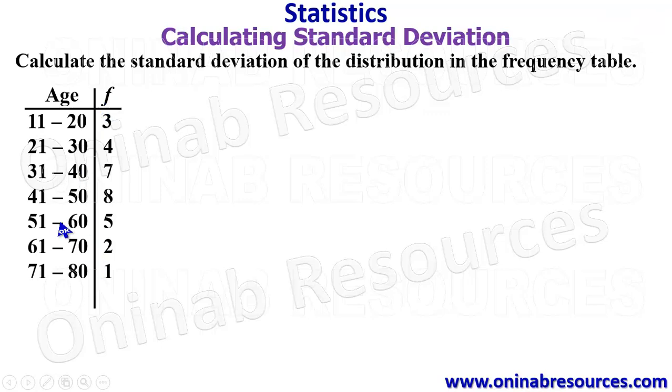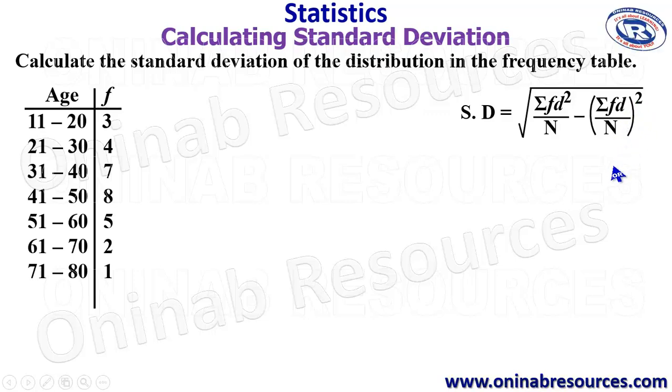We have the frequency table here and the intervals are range of ages and the frequencies are given. Before we go, we need to look at the standard deviation formula, which is square root of sigma fd squared over n minus open bracket sigma fd all over n all to the power of 2, where d is equal to x minus a. Our x is the mid value of the class interval, while a is the assumed mean. So we create additional columns for x, which we have already stated that it is the mid value of the class intervals.